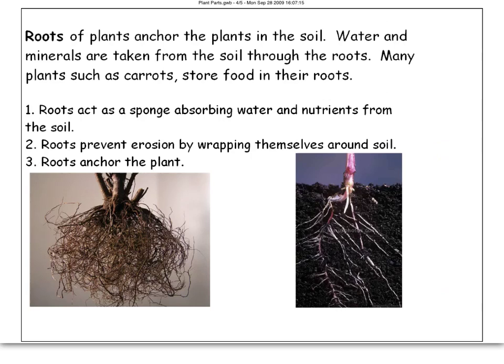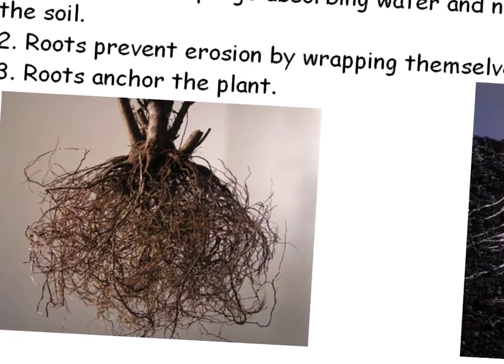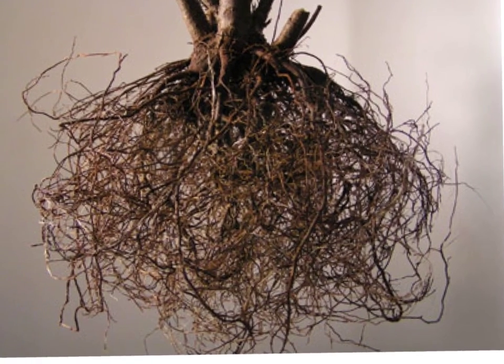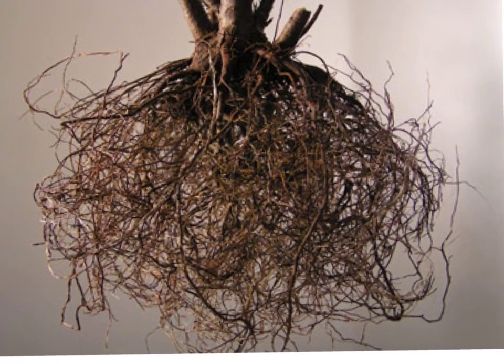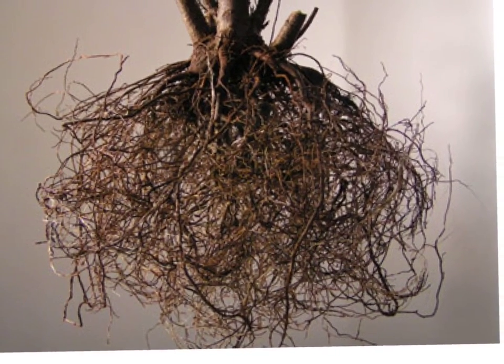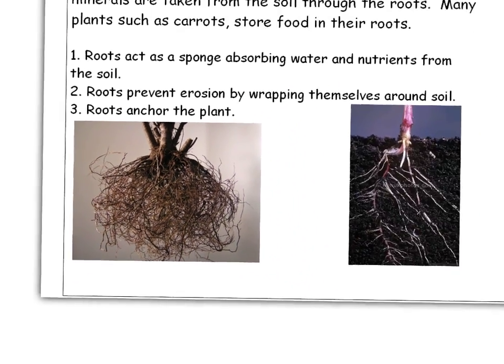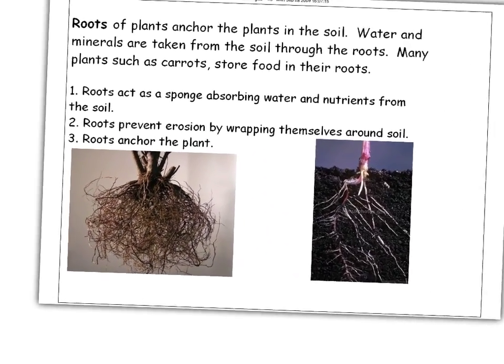The next part we're going to talk about are the roots. The roots of a plant anchor the plant in the soil. This is where we get the water and how it starts. A lot of plants, such as carrots, store food in the roots. Roots act as a sponge — they absorb water and nutrients from the soil. You can see how they look like hairs; these are root hairs, and though they're tiny — maybe about a millimeter wide or long — they collect all the water and act like a sponge, soaking it all up.